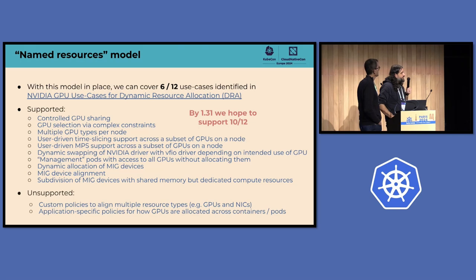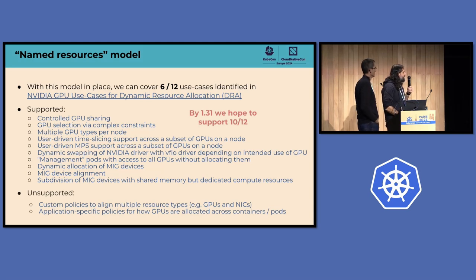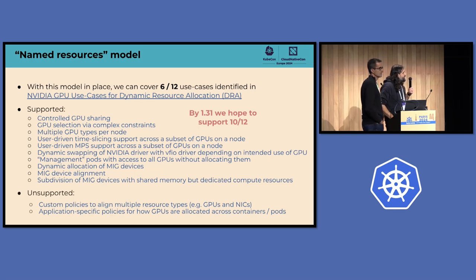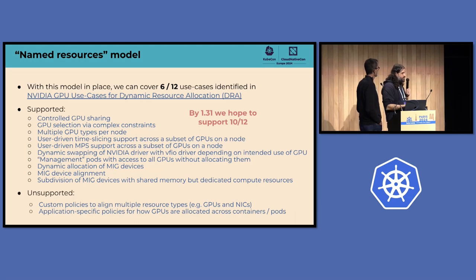The main things we're missing to enable 10 of 12 use cases are: first, the ability to partition resources to support something like MIG — a mode of operation for GPUs that allows partitioning into smaller pieces. We currently only have a way to name the top-level resource and its attributes, so we need a scheme for partitioning, which we have ideas for and are fairly confident we can get into 1.31. The second missing feature is management pods — pods that have access to all of the resources without actually allocating them, such as a device plugin or monitoring pod that needs access for monitoring but shouldn't consume those resources exclusively.